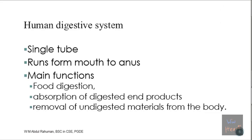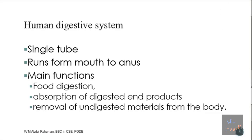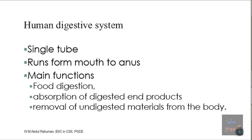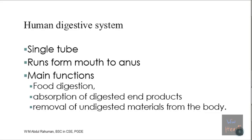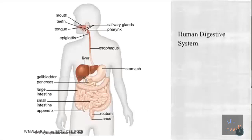There may be some stuff which cannot be absorbed - for example cellulose, a polysaccharide found in plants, especially green plants. It is a structural material. Cellulose can be digested mostly by animals such as goats and cows, but we cannot digest it. So the removal of undigested material from the body is also another function of the digestive system.